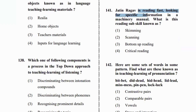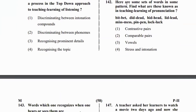A question that comes in the paper: a student is reading fast, looking for specific information. What is this called? What is the child doing when reading quickly? The answer is skimming. When the child reads quickly looking for specific content, that is skimming.